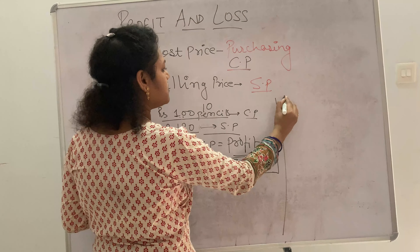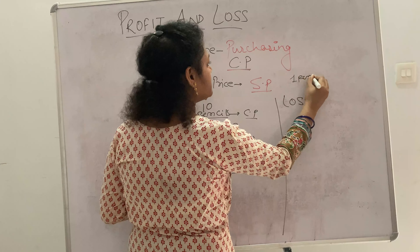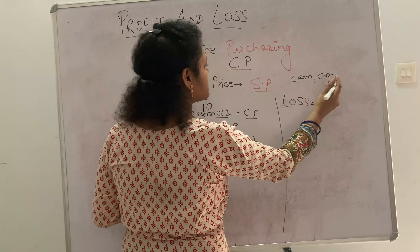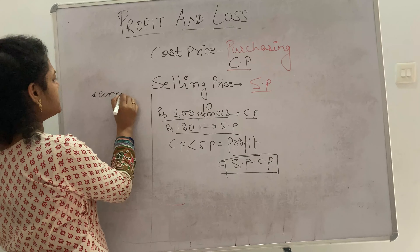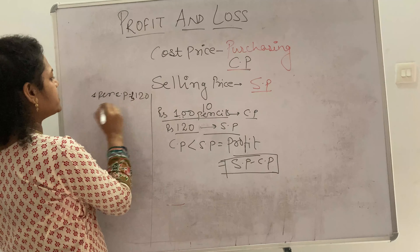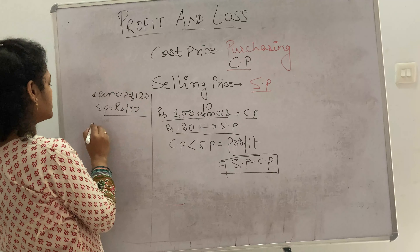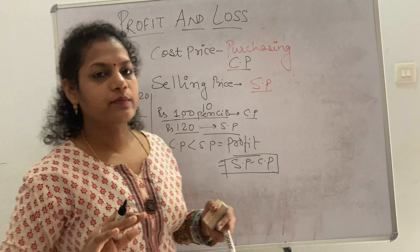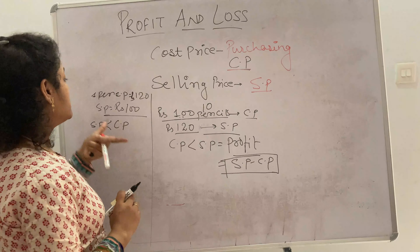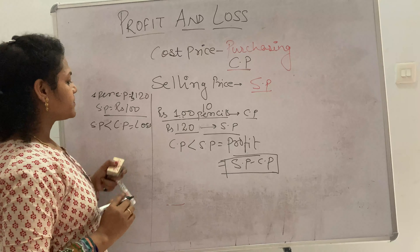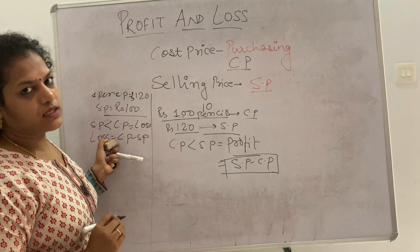Now for loss: suppose I am purchasing a pen and its CP is 120 rupees, and I am selling this pen to another person for 100 rupees. In this case SP is less than CP. As I bought the pen for 120 rupees and am selling it for 100 rupees, my loss is there. So loss equals CP minus SP.